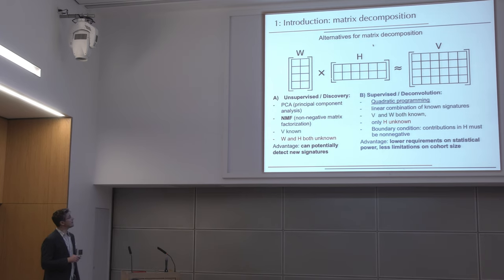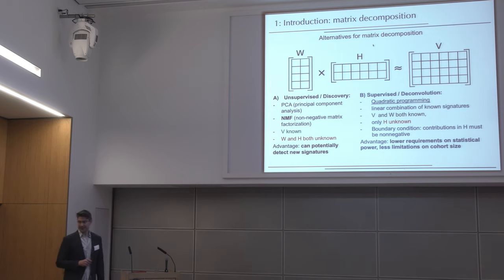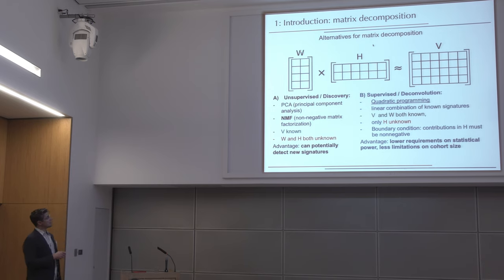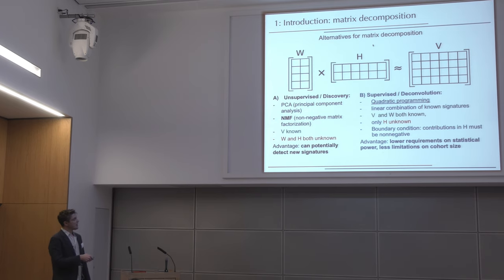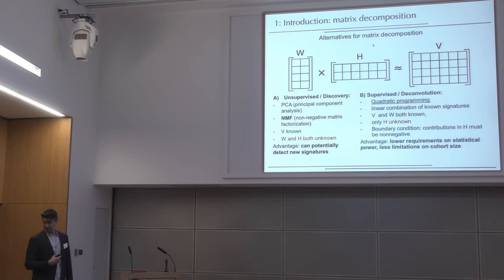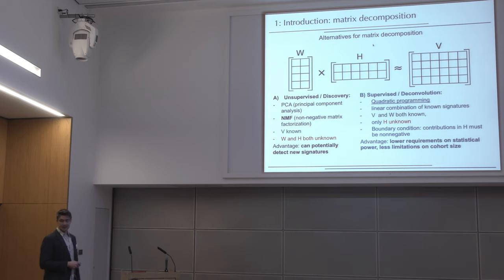On the mathematics of mutational signatures: NMF is very similar to principal component analysis. You have a big matrix V — called the mutational catalogue — with 96 rows and as many columns as there are samples, and you decompose it into W (the mutational signatures — the basis patterns) and H (the exposures — which patient has how much of which signature). If you only have V and know neither W nor H, you do a de novo analysis — the harder task. If you already know the signatures and just want the contributions, that's the supervised, easier task.